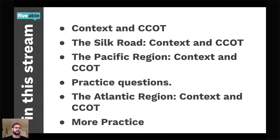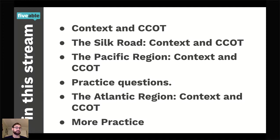We're going to quickly run over what it means to talk about context, continuity, and change over time. We're going to examine the Silk Road first, then the Pacific region covering East and Southeast Asia, then have a practice question, and then talk about the Atlantic region — the slave trade, the triangle trade, something called the bow tie trade, and then a little more practice after that.